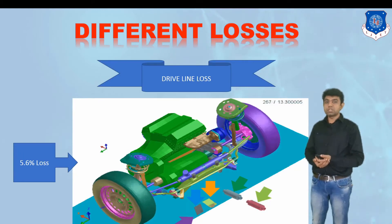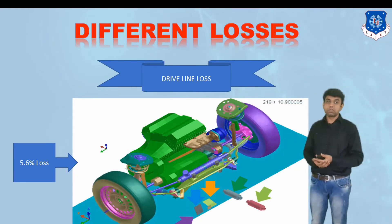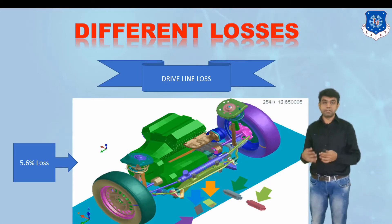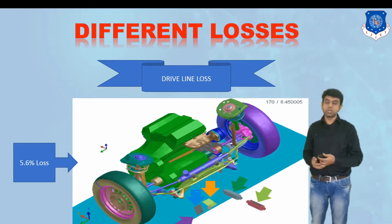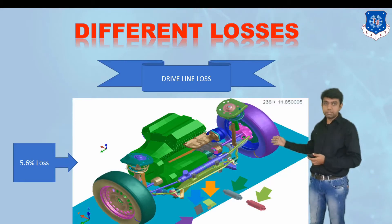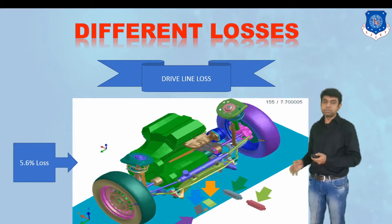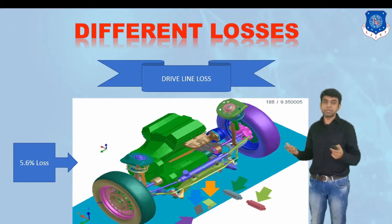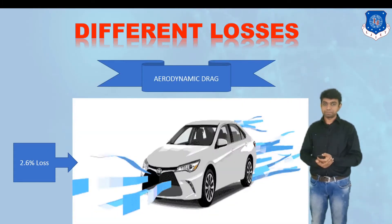The next loss is driveline loss, accounting for about 5.6%. We are now thinking about different ways this transmission loss can be reduced — for example, through proper gear design in that domain.